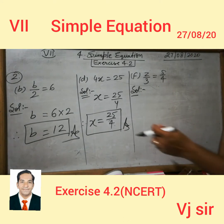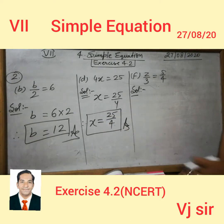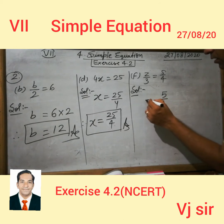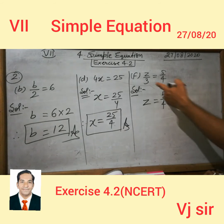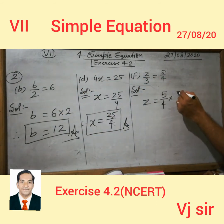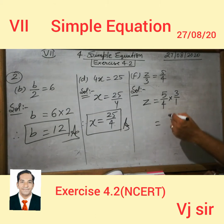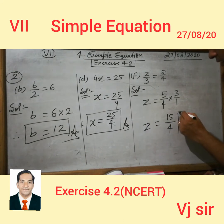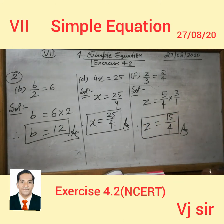Now we will solve this question. What you have on the right-hand side, write the answer in a box. It is divided, then it will go to the right-hand side in the form of multiplication. So the answer is 15 upon 4. Is that clear? It is the answer — it is so simple.